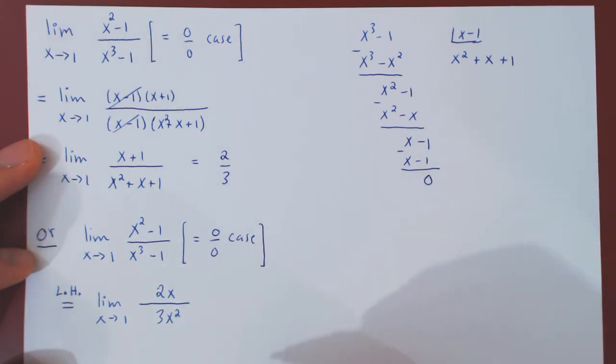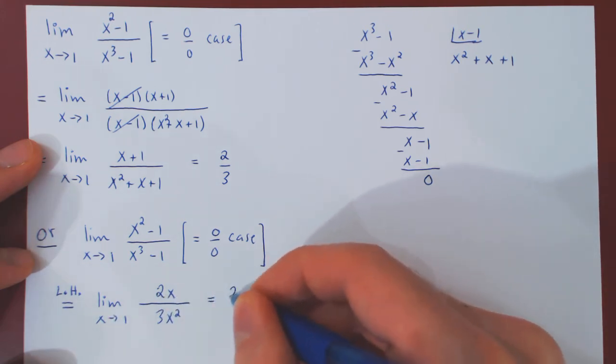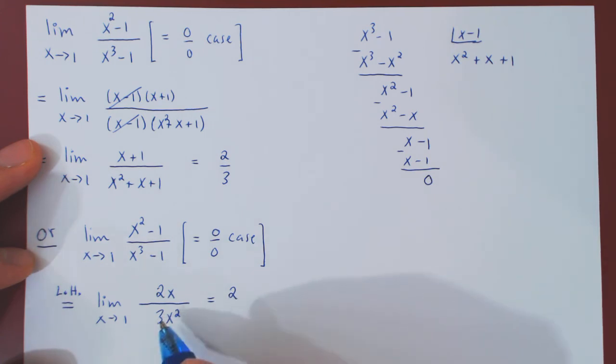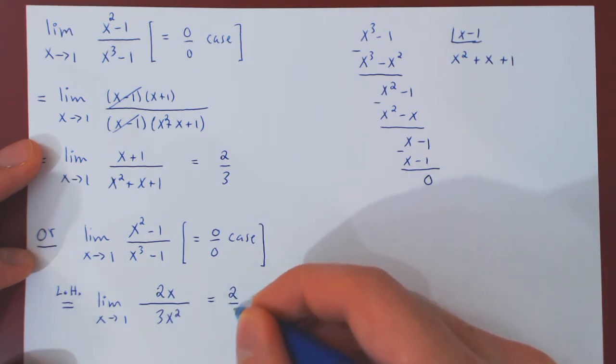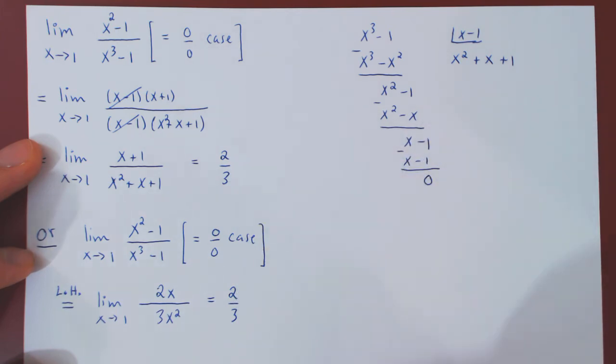And now the limit is trivial. As x approaches 1, 2x approaches 2. And as x approaches 1, 3x squared approaches 3. And once again, we have a limit of 2 thirds.